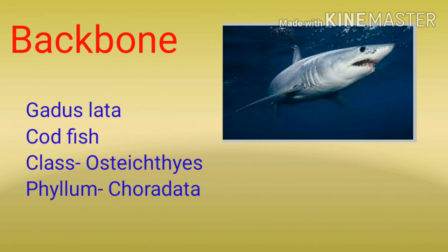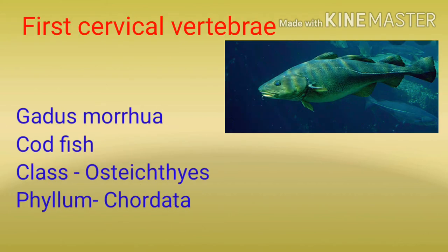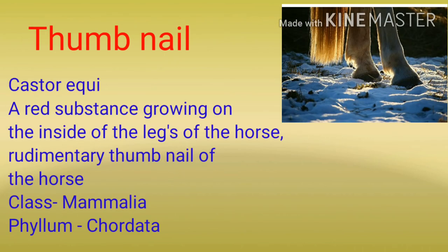अब हम बात करने वाले हैं animal backbone से बनने वाली homeopathic medicine के बारे में। यहाँ हमने example लिया है Gadus lata का, जो कि codfish की एक species से बनती है। इसके अलावा first cervical vertebra of the animal से भी medicine बनती है, जिसके लिए example है Gadus morhua का — जो कि codfish की ही एक species है।